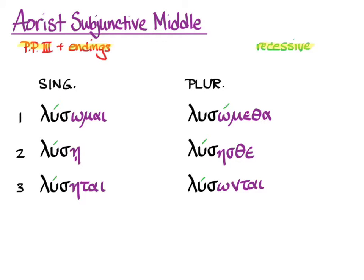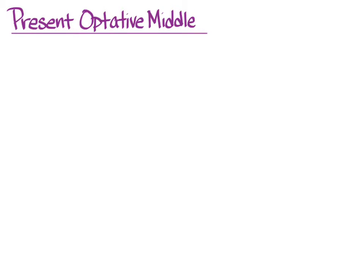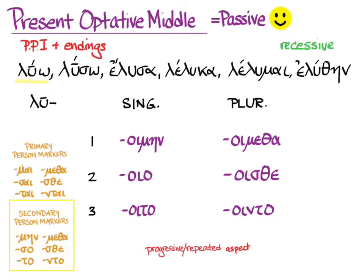Let's move on to the optative. The present optative middle is exactly the same as the present optative passive. It comes from principal part one, as all things present, ending with the omicron of the present tense and the iota of the optative, giving you: -oimēn, -oio, -oito, -oimetha, -oisthe, -ointo. The accent is recessive, and it has progressive repeated aspect. Of course, no default translation until we have a context.